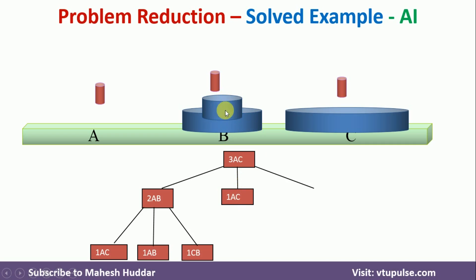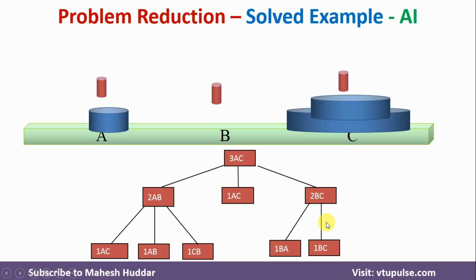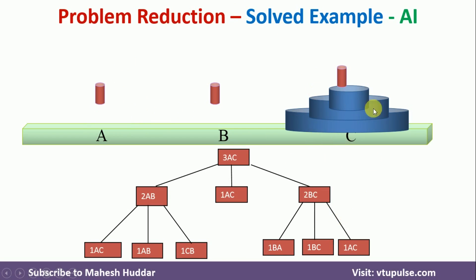The third sub-goal is moving two blocks from B to C, which cannot be done directly. First, move one block from B to A; then move the block from B to C; finally, move the smaller block from A to C. Once this is done, we achieve the goal of moving three blocks from A to C with the constraint that the smaller block is placed on the larger block. This is how we solve the Towers of Hanoi problem using problem reduction in artificial intelligence.